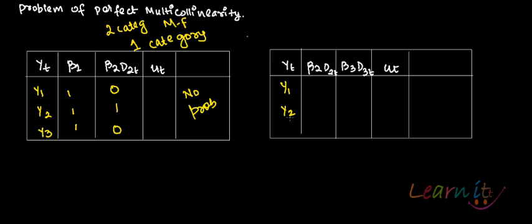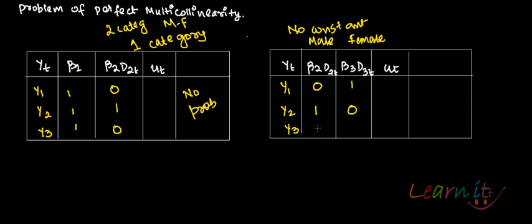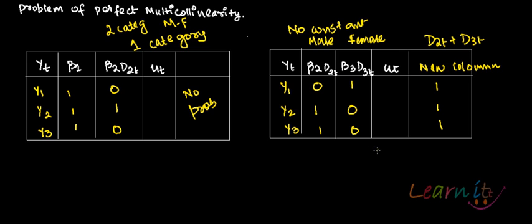Supposedly, you have three persons y1, y2, y3 and there is no constant in this model. This person is female, so it will be 0 for d2 and 1 for d3. d2 is for male, d3 is for female. This person is male, and this person is also male. If you compute the new column d2t plus d3t, you get 1, 1, 1. But this is not identical to any other column because there is no constant here, so there is no problem of multicollinearity. Here also, you avoid the dummy variable trap.